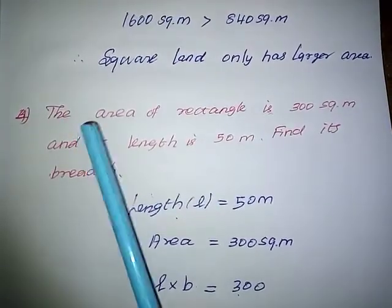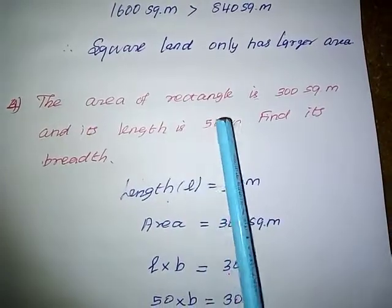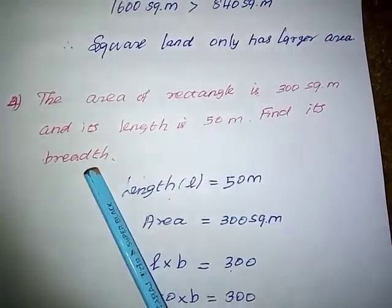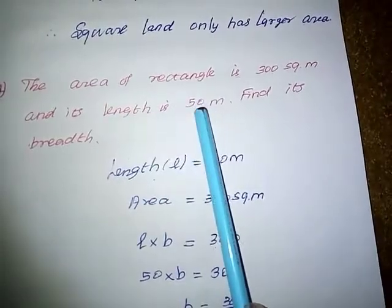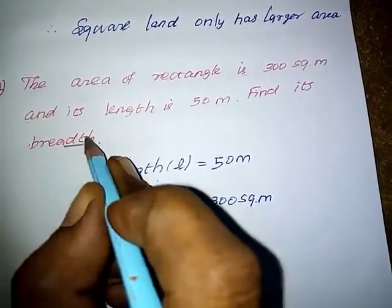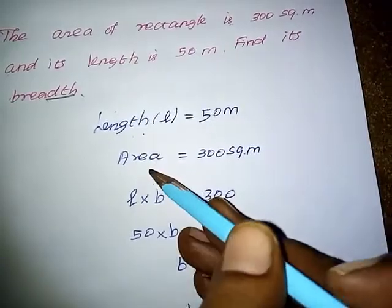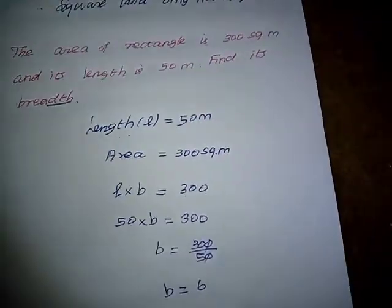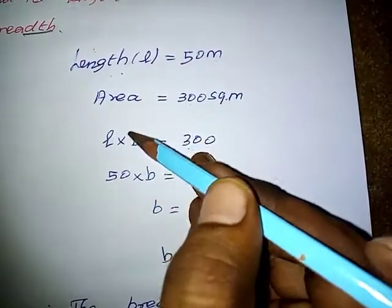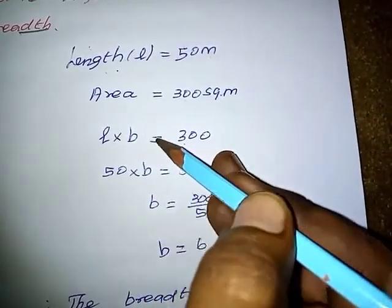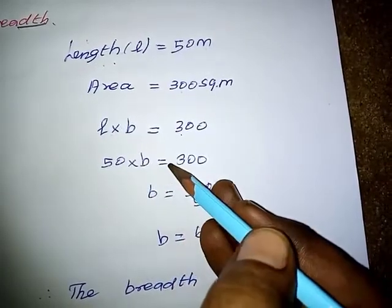Question number four: the area of a rectangle is 300 square meters and its length is 50 meters. Find its breadth. Given: area equals 300 square meters, length L equals 50 meters. We know area equals L into B, so 50 into B equals 300.